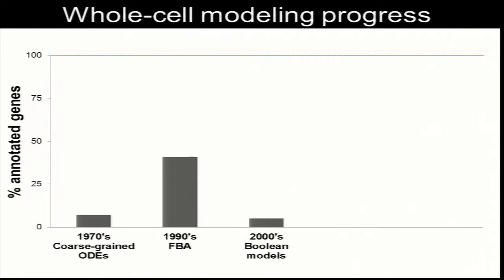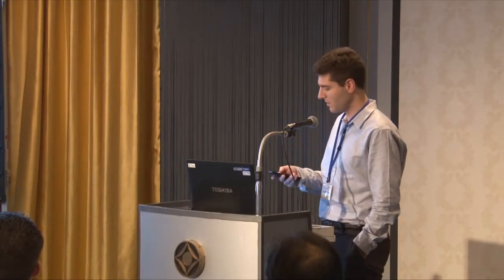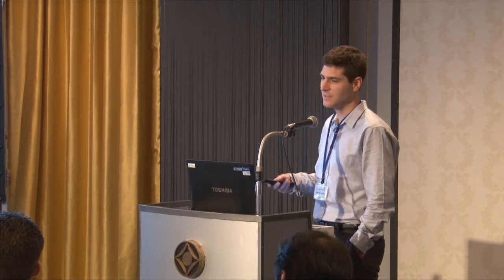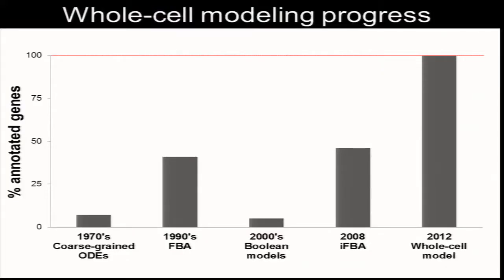The most successful technique is something called flux balance analysis, which has been used to model microbial metabolism. The problem with these kinds of approaches is that they're very qualitative. You can't use them to make quantitative predictions, and they make assumptions which prevent you from applying them to model all of cell physiology. What we've been trying to do is come up with new ways to build more comprehensive models that account for every gene in a cell.